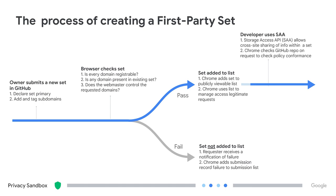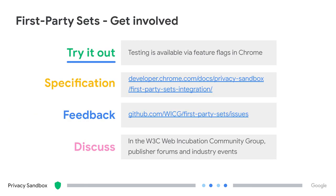The process of creating a first-party set is fairly straightforward. It begins with the set owner compiling the set of domains they want to add and submitting it to GitHub. Then there's a series of automatic checks that ensure the submission rules for the subsets are followed. The most important part is the final stage, which requires developers to use the storage access API. In Chrome, these calls would be automatically granted for same-set members without user prompts. First-party sets testing is available now by enabling feature flags, and we would love to hear from you about your use cases and ideas around the current proposal.